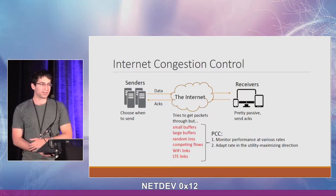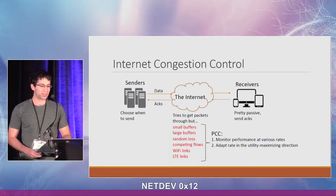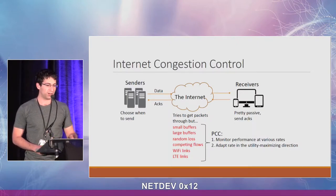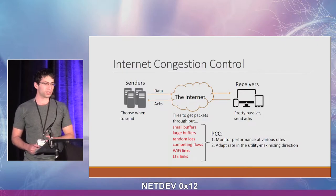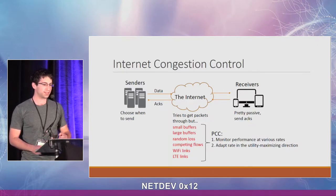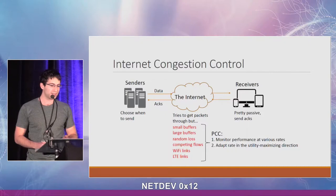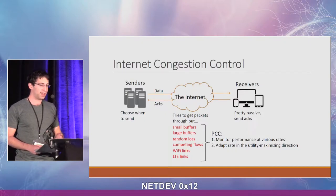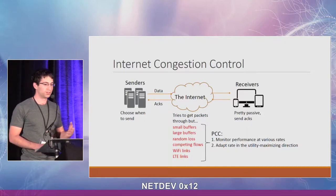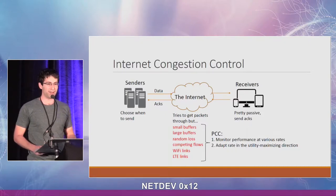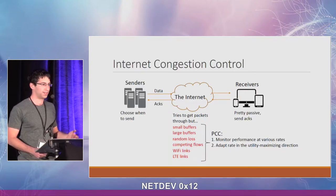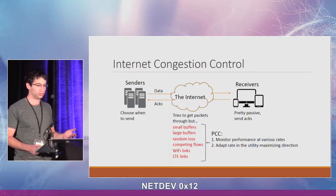The third approach we're going to talk about is PCC — Performance-oriented Congestion Control. PCC tries to monitor the performance of various sending rates and then adapt the rate to maximize its utility.